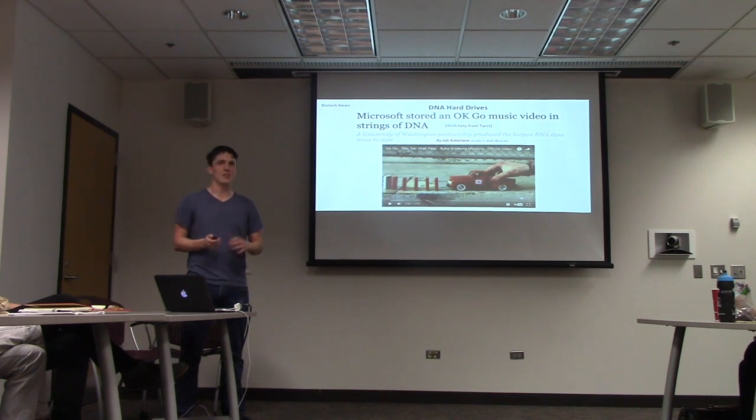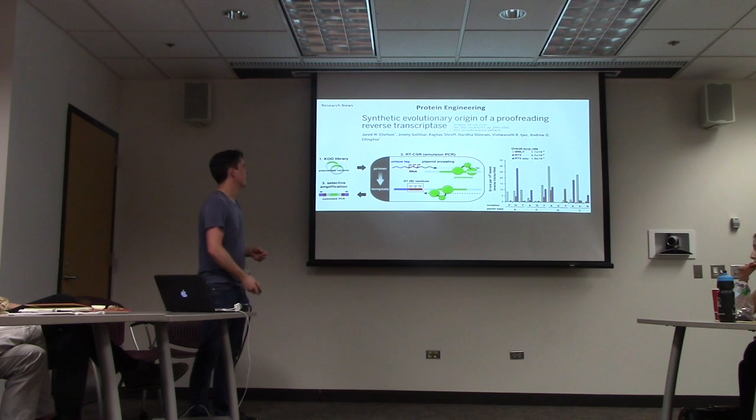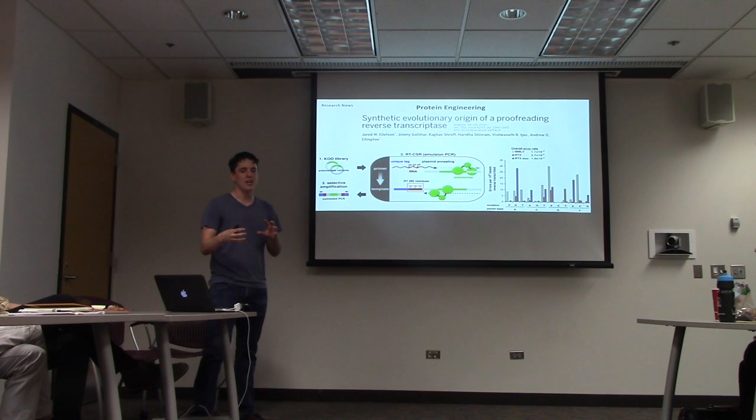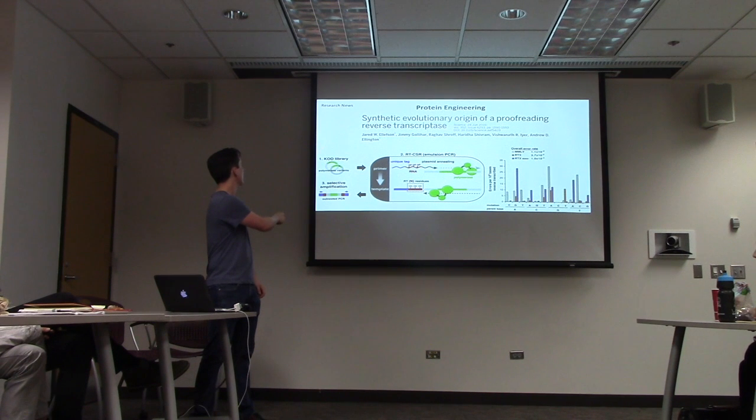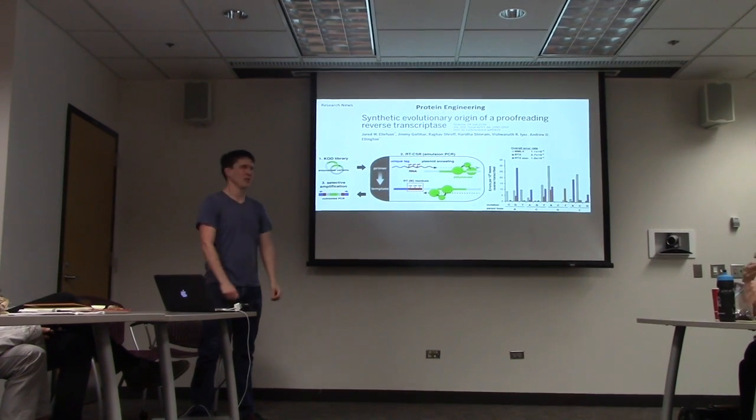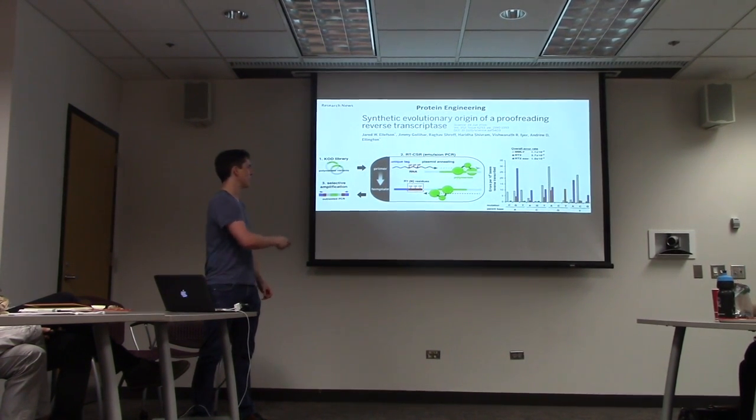Moving on to the actual sort of research articles and starting off with protein engineering. Andy Ellington's lab at UT Austin developed reverse transcriptase that's actually able to proofread and has much lower error rate than current reverse transcriptase. And he actually started with a KOD DNA polymerase and used a combination of sort of in vitro evolution and rational design and was able to get the error rate down significantly.